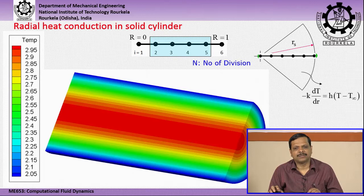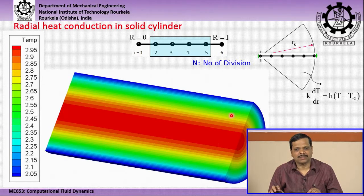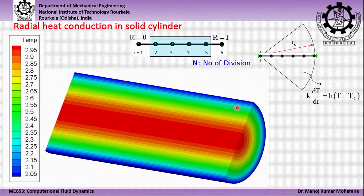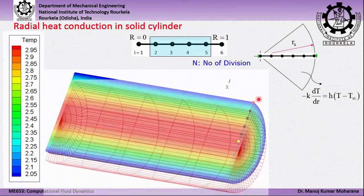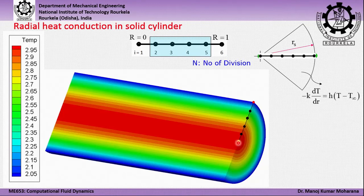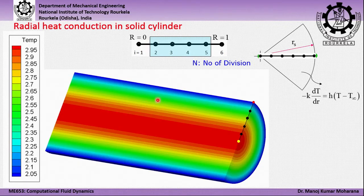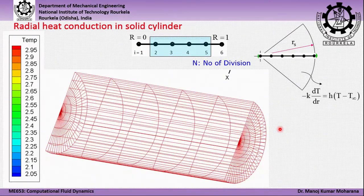This shows the three-dimensional view of the temperature contour diagram. The same information is used, with temperature values remaining constant along the Z direction — that is, along the axis of the cylinder. The grids are considered in the radial direction from center to outer surface, and the temperature remains constant as we move in the angular and axial directions.